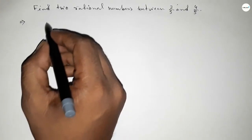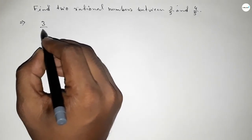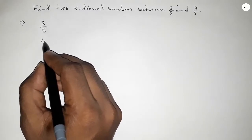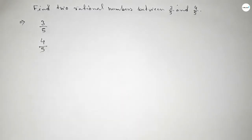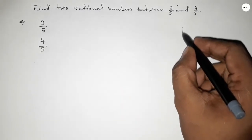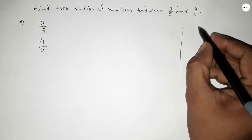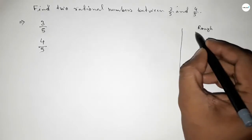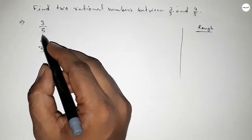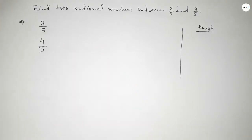Let's start the video. First of all, write down the given numbers: 3/5 and 4/5. Now, discussing the calculation - the denominators of both are the same, so we need to find...